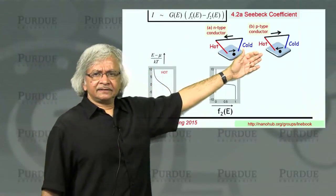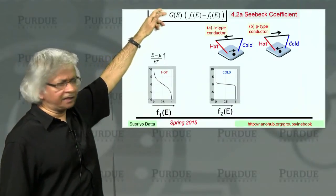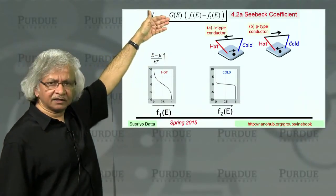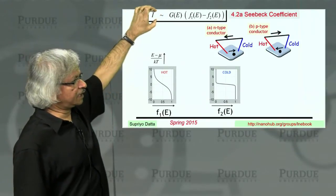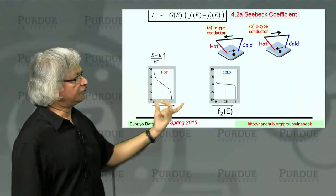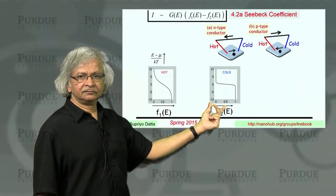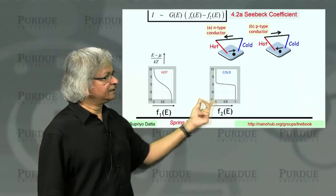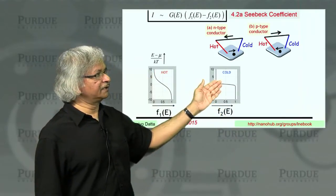So how do you understand that? Well, if you just look at this equation, what I claim is this difference you can understand in a relatively simple way. The current depends on F1 minus F2. Now, if you look at F1 minus F2, this is F1, this is F2. What you'll notice is that at certain energies, F1 is bigger than F2.